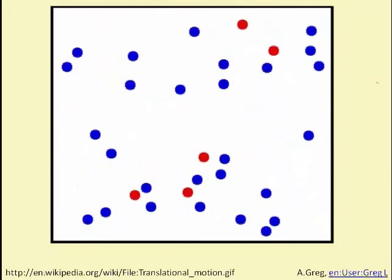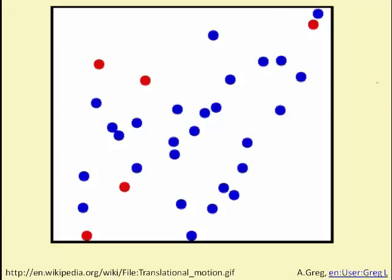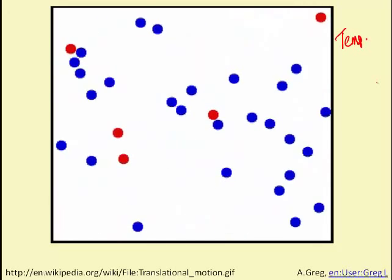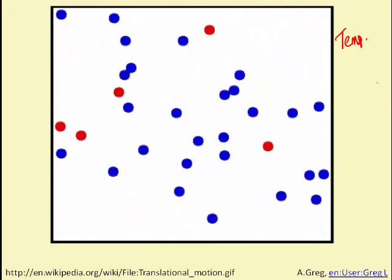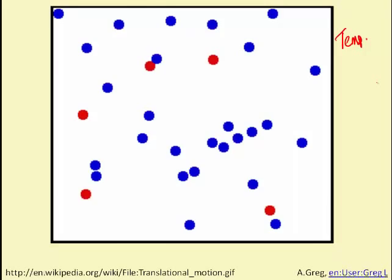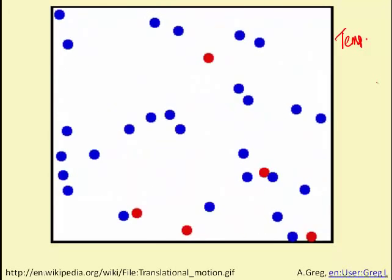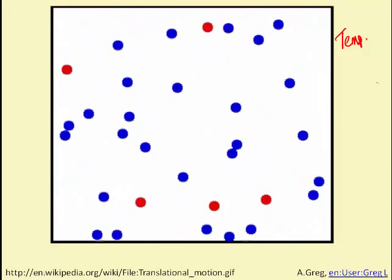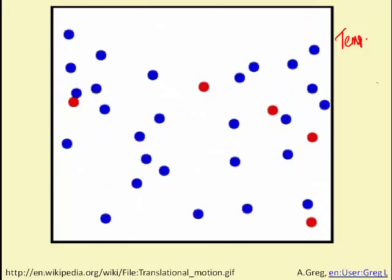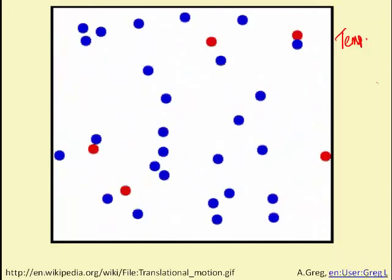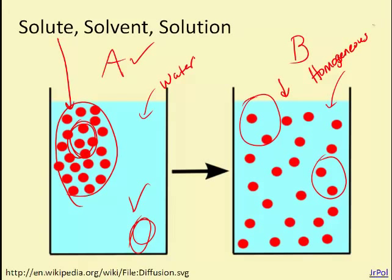The rate at which they move around is dependent on temperature. If you give them some extra heat energy, they will move faster, and diffusion will occur more quickly. The concentration gradient also is a factor. If you have a greater difference of concentration, diffusion is going to occur faster.